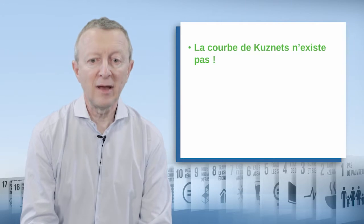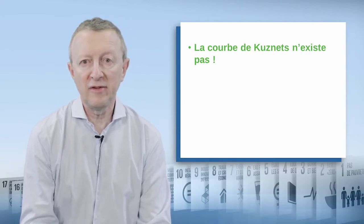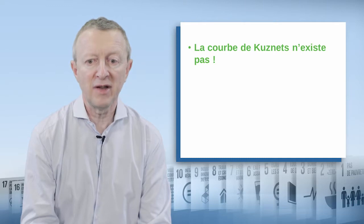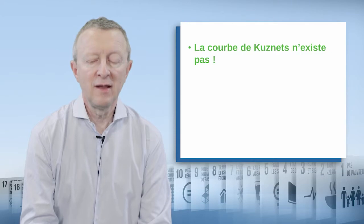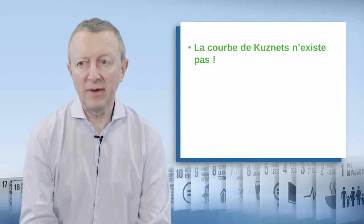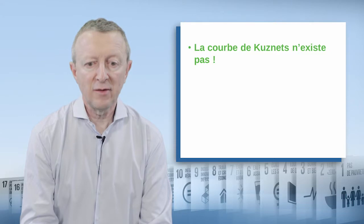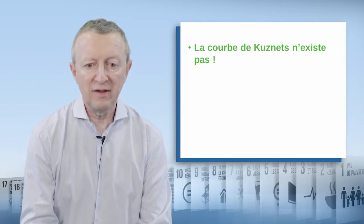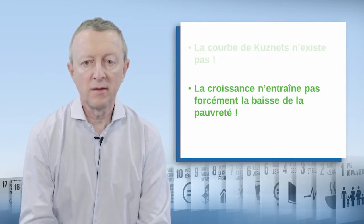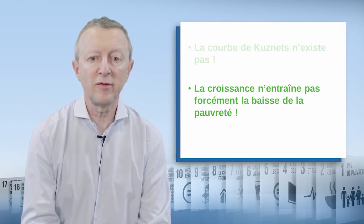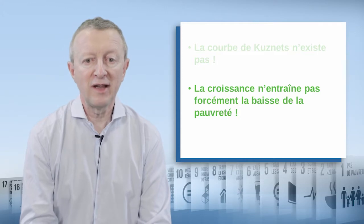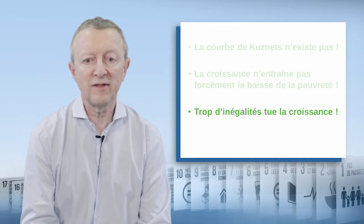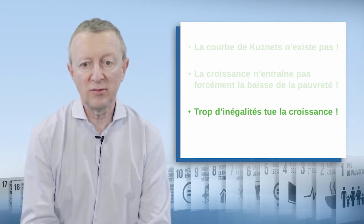Other work has shown that absolute poverty — defined as the famous one dollar per day per person — decreases more or less quickly when the economy grows. Some countries are characterized by a high level of inequality, and in fact growth has very little effect on reducing poverty there. In countries with low inequality, poverty declines much faster.